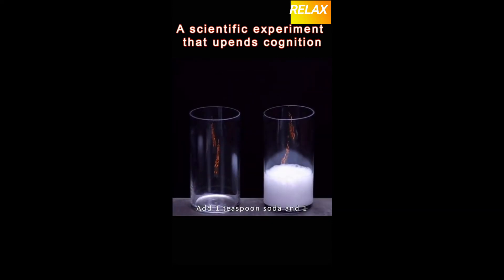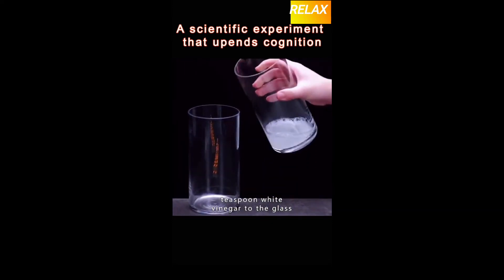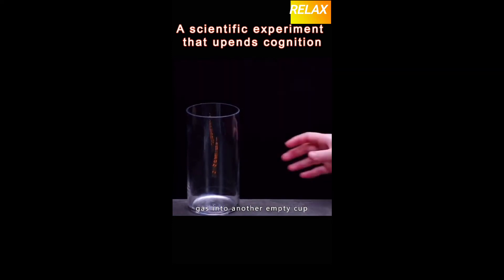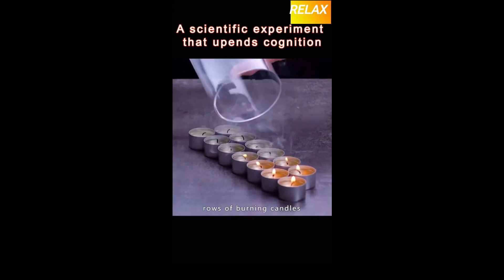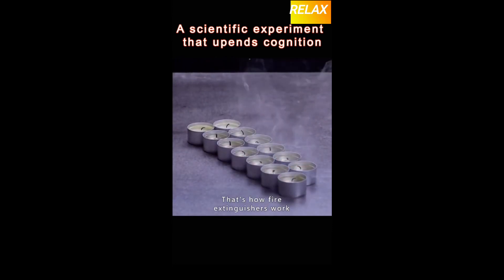Add one teaspoon soda and one teaspoon white vinegar to the glass. Pour the resulting gas into another empty cup. This invisible gas actually doused two rows of burning candles. That's how fire extinguishers work.